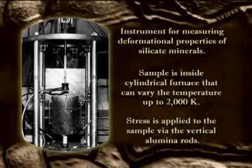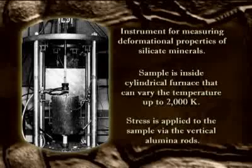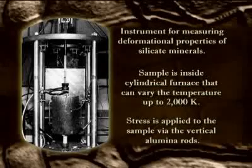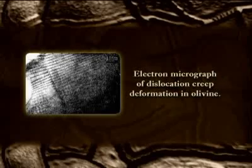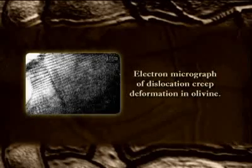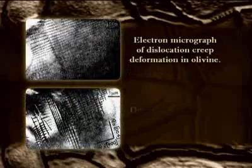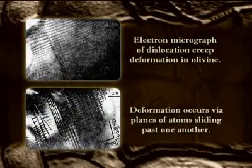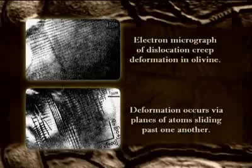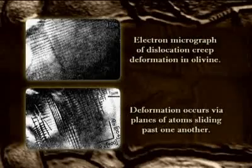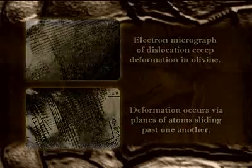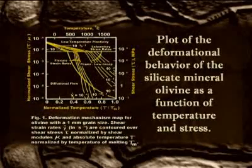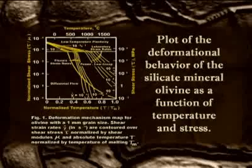From the rate of deformation of the crystals, one can back out their mechanical properties. One can also look at them after the experiment to see the style of deformation. This is a photograph from an electron microscope showing how planes of atoms have slid over one another. This kind of deformation is known as dislocation creep. It's very well studied, and they're able to generate maps like this — a map of deformation rate versus stress versus temperature.